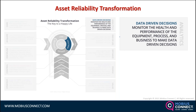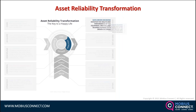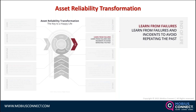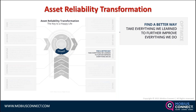Everything you do needs to be aligned with the goals of the business, but from time to time those goals change — a pandemic, a global economic crisis, a shift in the nature of competition. There are many factors, and we need data-driven decisions. As part of that, we need to learn from failures, near misses, and poor performance. When equipment fails, we have to ask why it happened and how we can avoid it happening again.